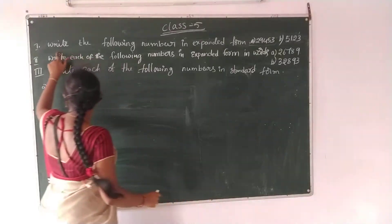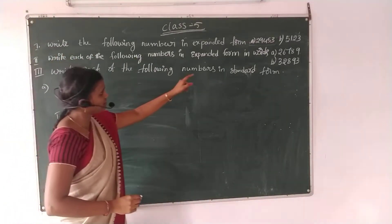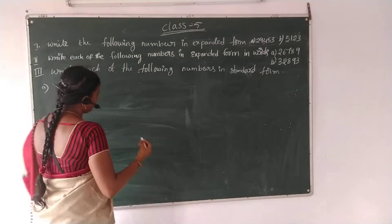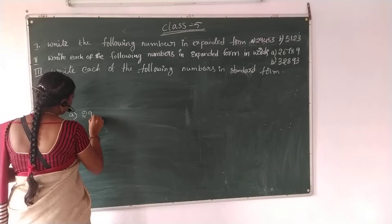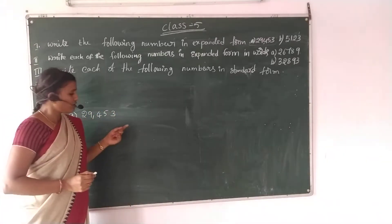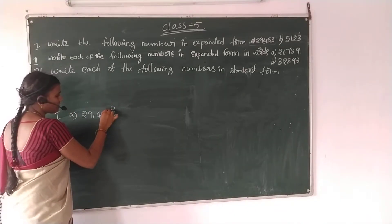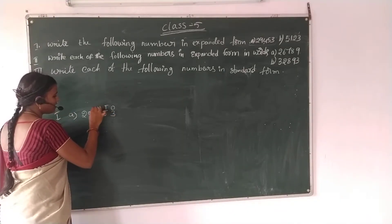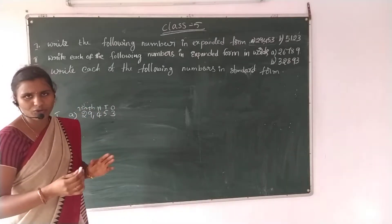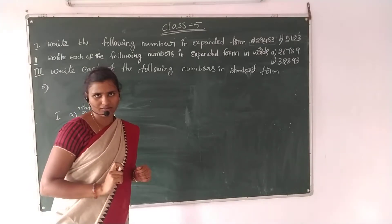The first number is 29,453. You replace the place values: 1 times 100, 1,000, and 10,000. You already know this exponential from your previous class, but I am explaining it once again.